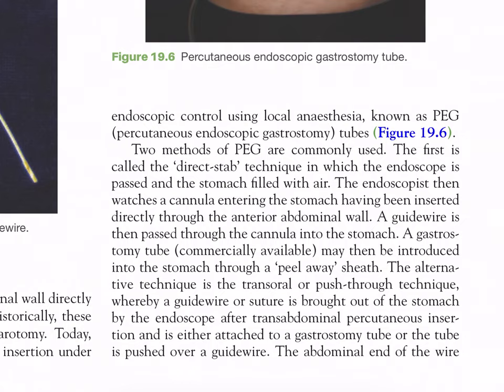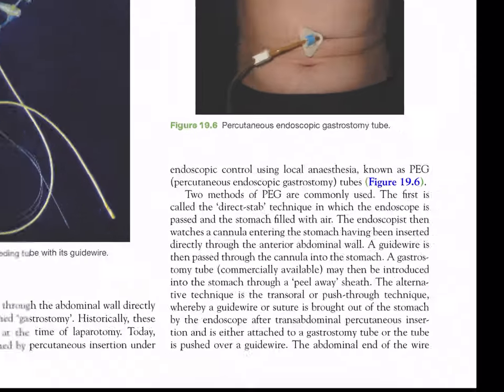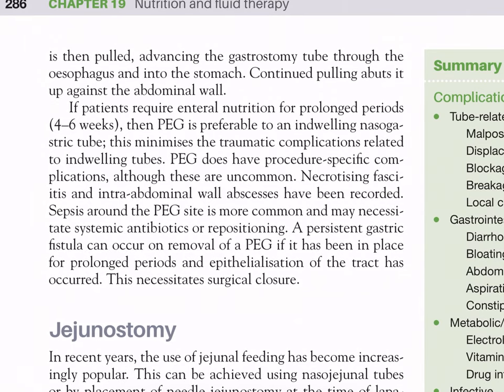Two methods of PEG are commonly used. The first is the direct stab technique: the endoscope is passed and the stomach filled with air; a cannula is inserted directly through the anterior abdominal wall and observed entering the stomach; a guide wire is passed through the cannula; a gastrostomy tube is then introduced through a peel-away sheath. The alternative transoral push-through technique uses a guide wire or suture brought out of the stomach after transabdominal percutaneous insertion; the abdominal end is then pulled, advancing the gastrostomy tube through the esophagus and into the stomach, abutting it against the abdominal wall.